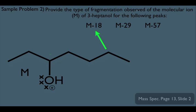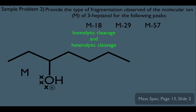Let's look at our alcohol and locate our alpha, beta, and gamma carbons. Notice, since we have a gamma carbon, we do have a gamma hydrogen, so it is technically possible that this molecule could lose water. And remember, gamma cleavage — the type of fragmentation observed is both homolytic and heterolytic. This is what this question is asking us: what is the type of fragmentation that would lead to a fragment weighing M minus 18?